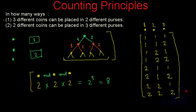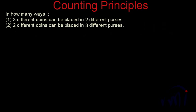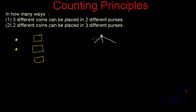Now let's solve the second part. We have two coins and three different purses. For each coin we actually have three choices. So for the first coin, it can go either to purse number one, purse number two, or purse number three. After placing the first coin, for the second coin we again have three choices — purse one, two, or three. Here also we have three choices, and here also we have three choices.